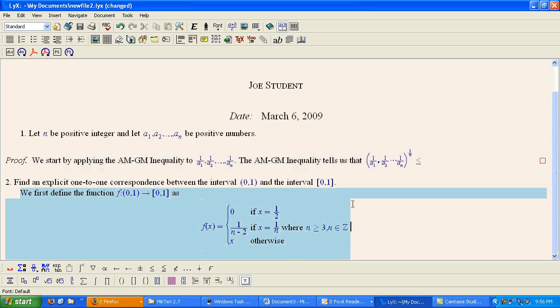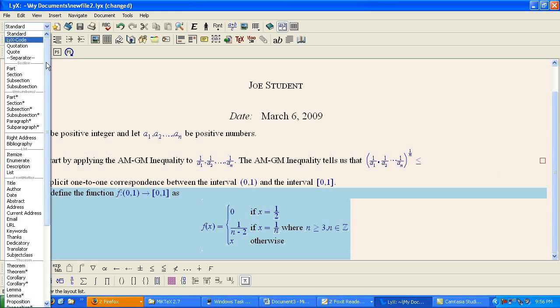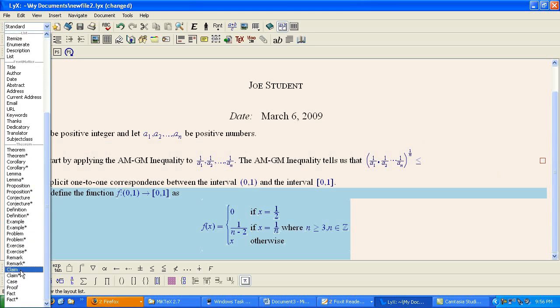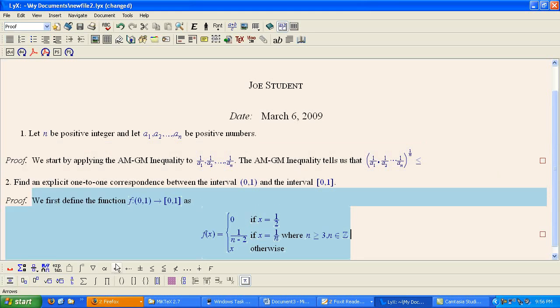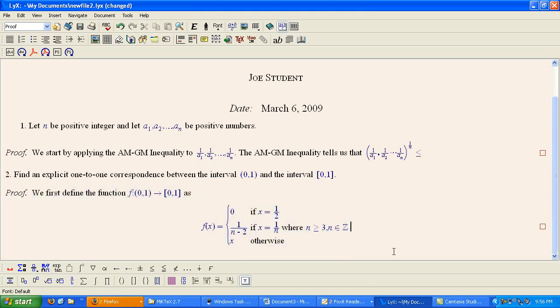For our second problem, we highlight our proof text. Go to the environment box. And change it to proof. And again, we're going to preview what we have here. Hit the view PDF button.